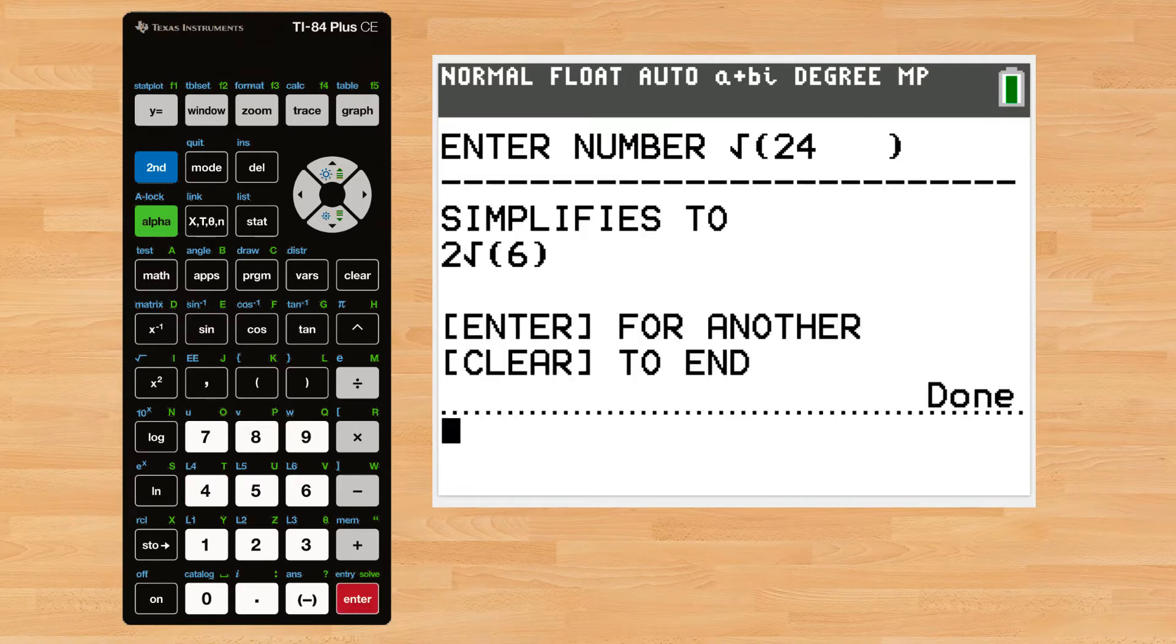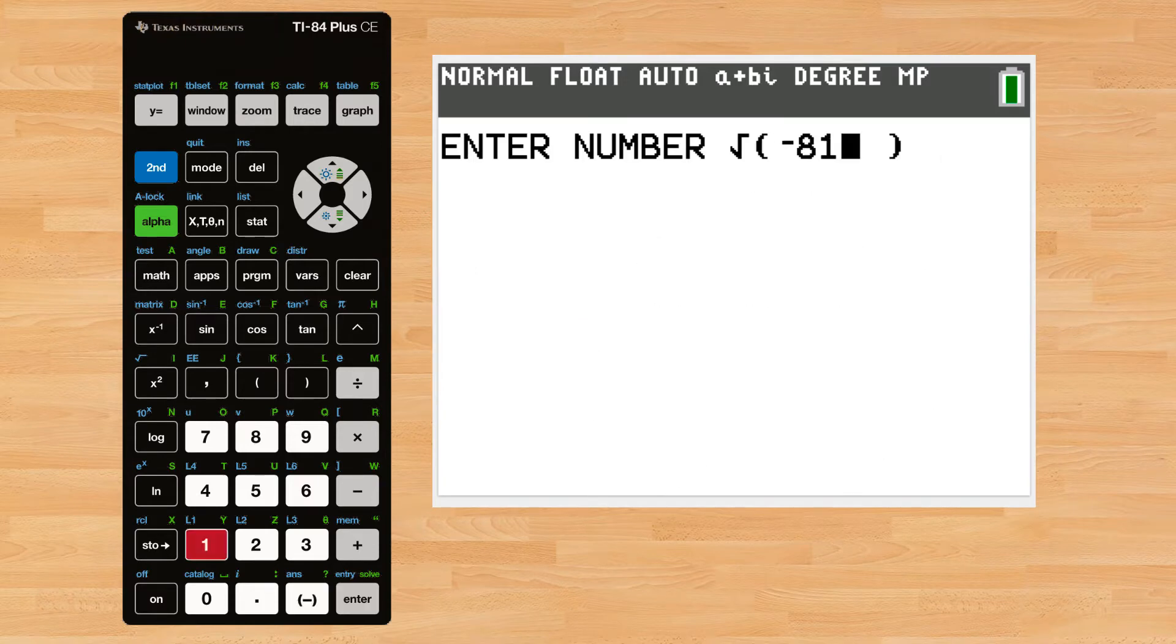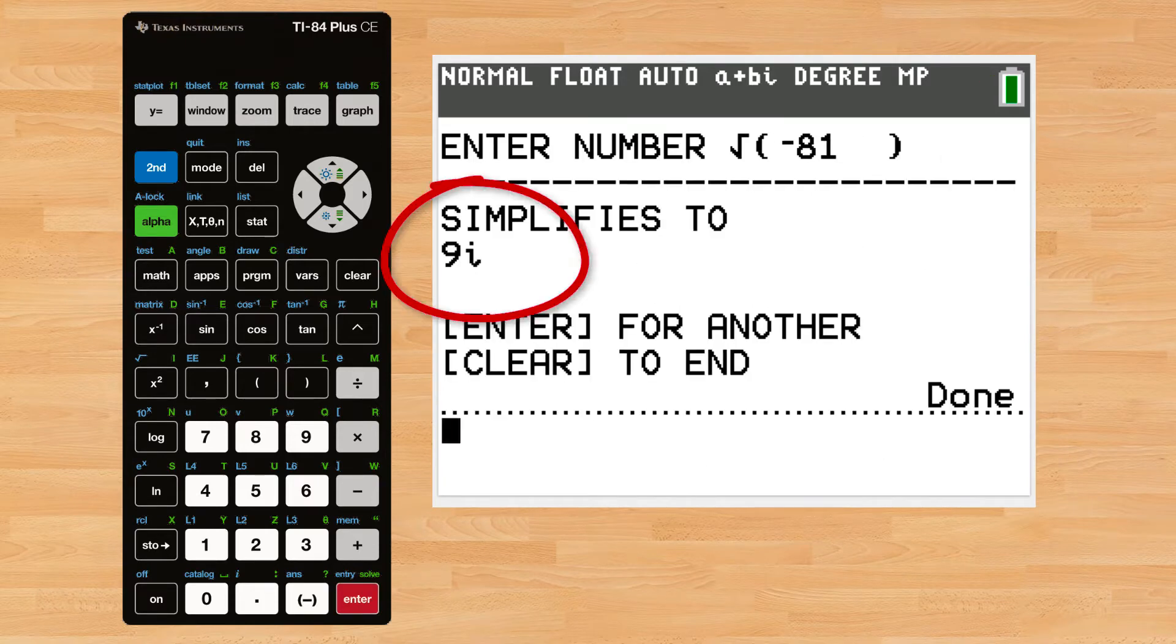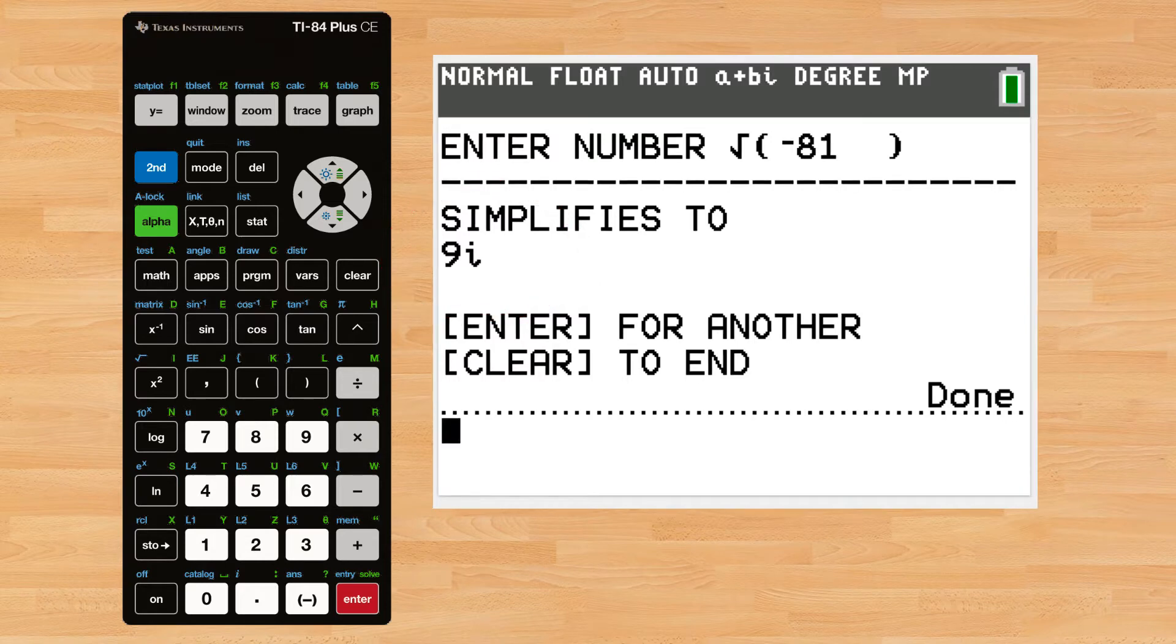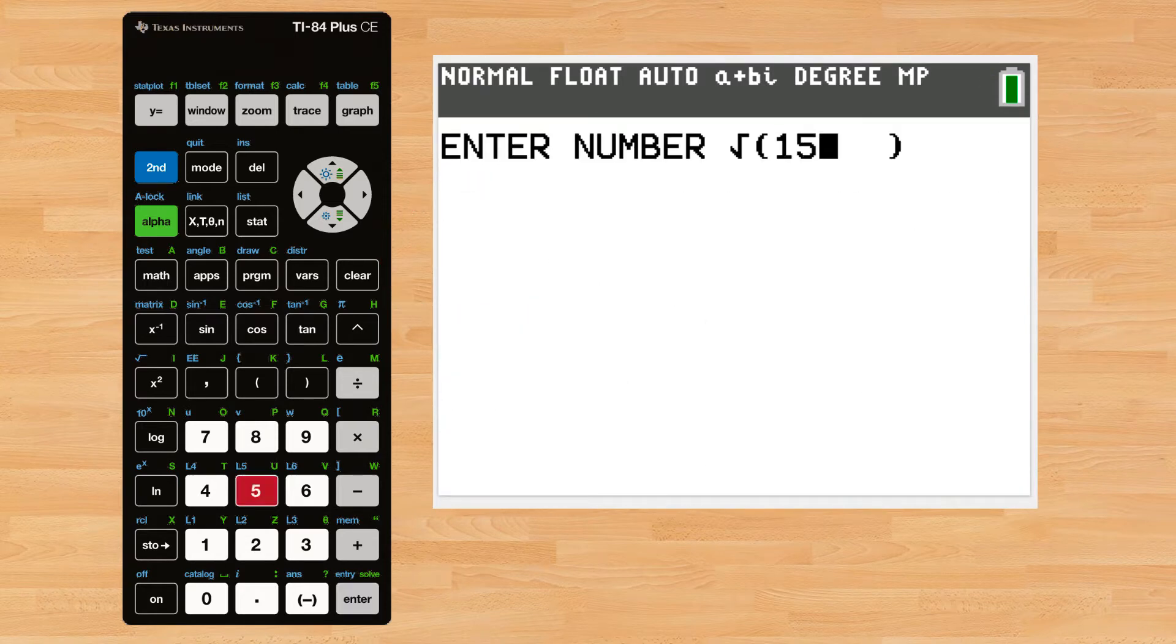Try the square root of 24. 2 radical 6. How about negative 81? 9i where the i is imaginary. Keep pressing the enter key to put in a new number.